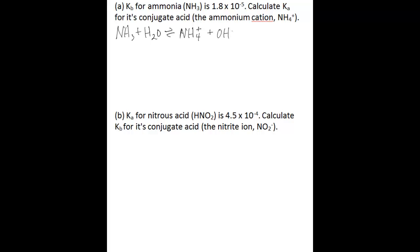Plus the hydroxide ion. The Kb equation, or the equilibrium expression for this reaction, is the concentration of ammonium multiplied by the concentration of hydroxide, divided by the concentration of ammonia. And we know that this Kb value is 1.8 times 10 to the negative 5.